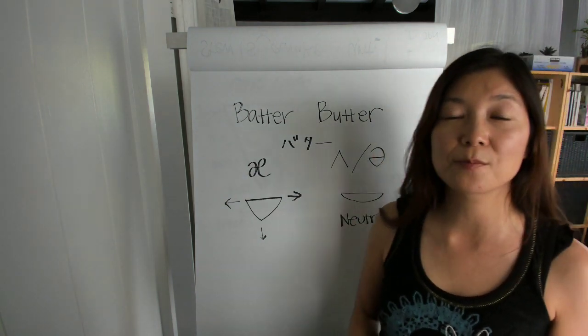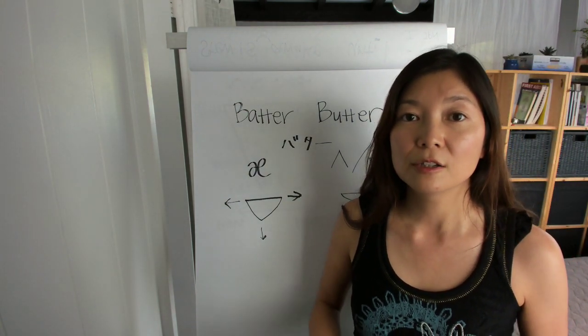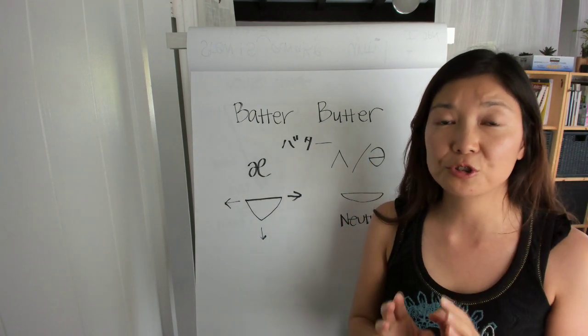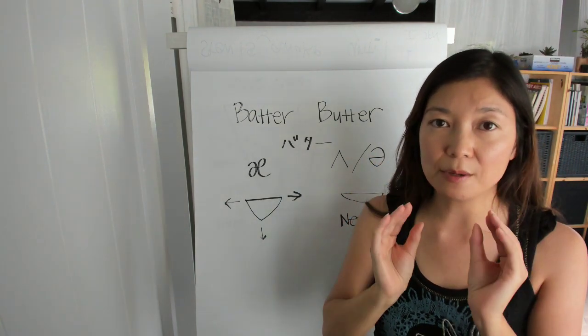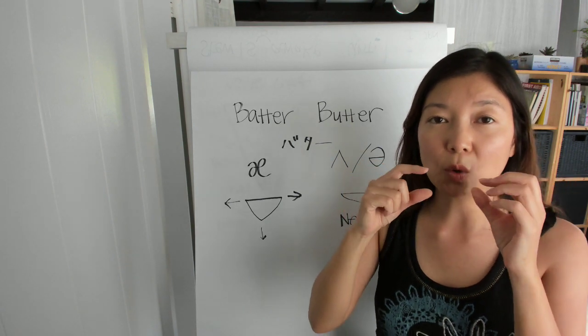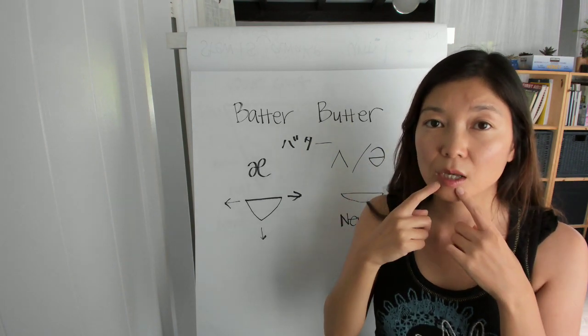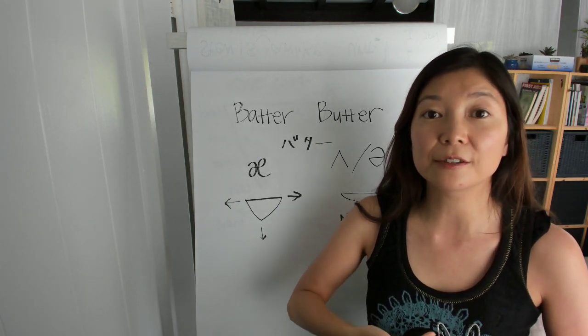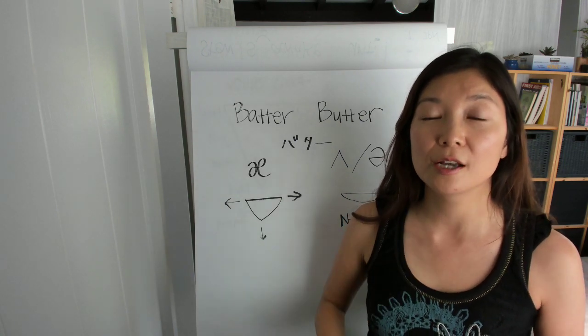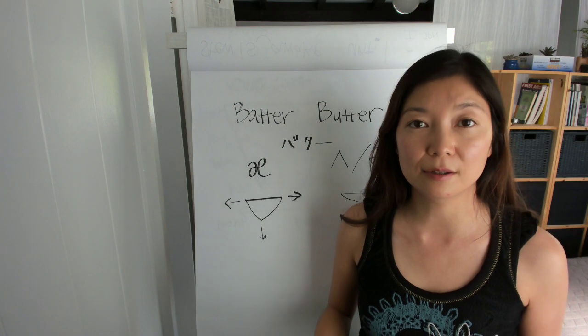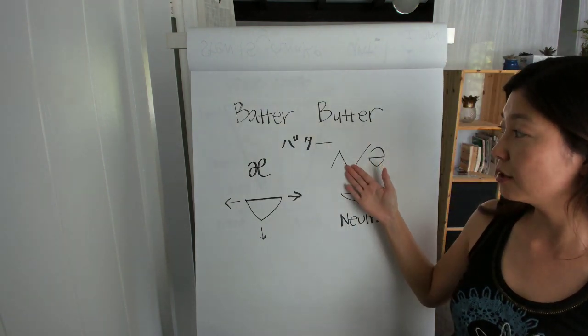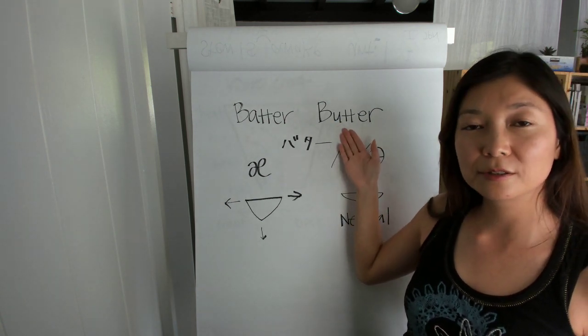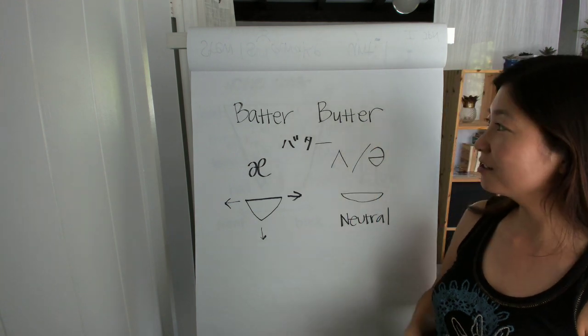So for this one you want to have all the parts of your mouth very neutral. You don't want to tense your lips or tongue. You just want to open your mouth very slightly and then pronounce it. Try to produce the sound from your diaphragm and make sure your throat is open. So that is American schwa. And then this one: butter, butter.